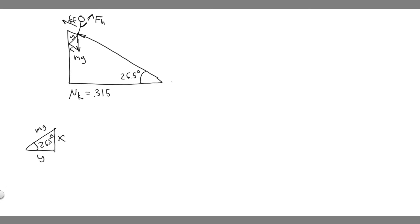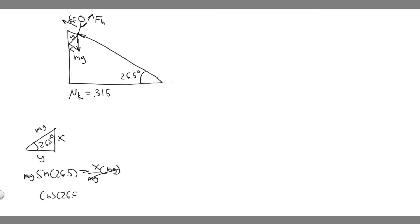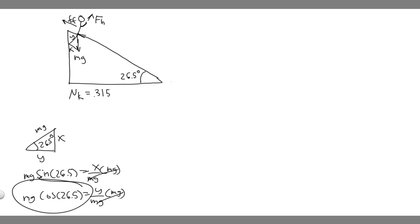To find the x-component, we use sine. The sine of 26.5 degrees equals opposite over hypotenuse, so that's x over mg. Solving for x: the x-component of the weight force is mg·sin(26.5°). For the y-component, we use cosine. Cosine of 26.5° equals adjacent over hypotenuse, so y over mg. Solving: the y-component of the weight force is mg·cos(26.5°).